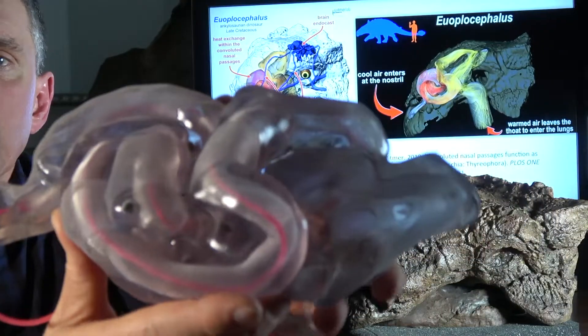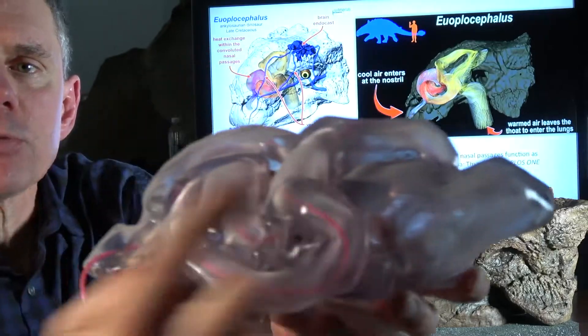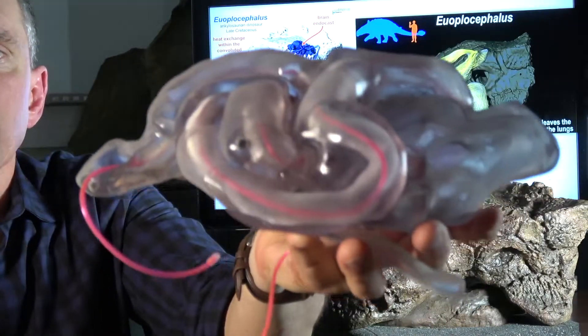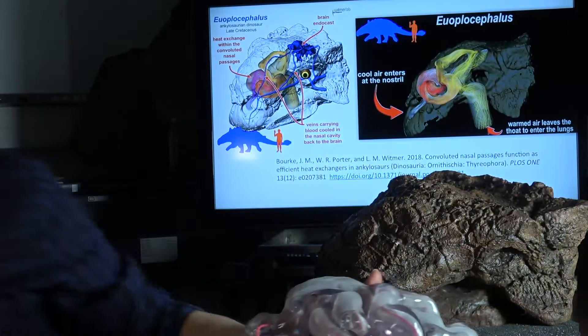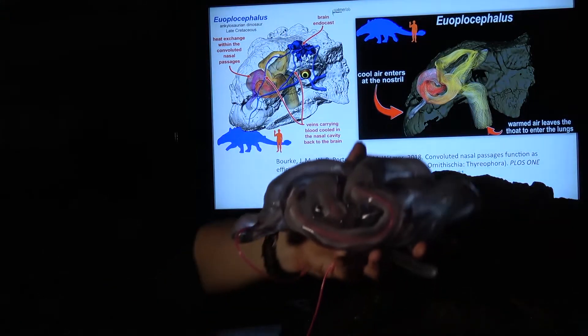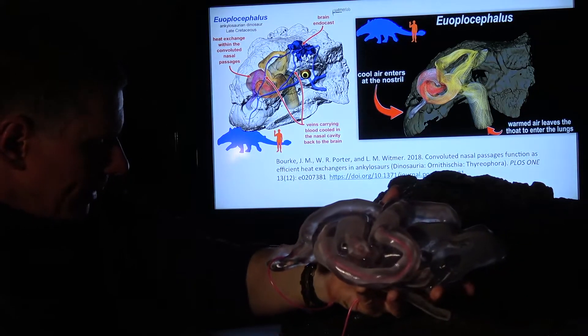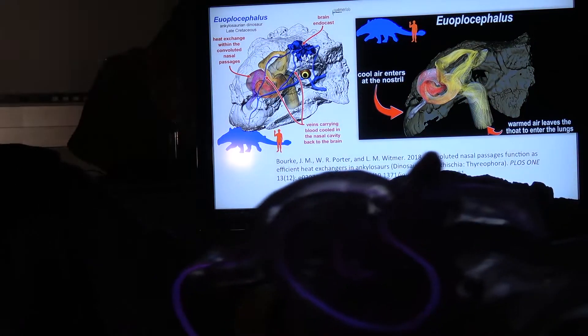And so one of the things I also wanted to do was be able to visualize the tortuous pathway in there by actually inserting this electroluminescent wire. So what I'll do is I'll turn off the main light here and turn on the light in here.